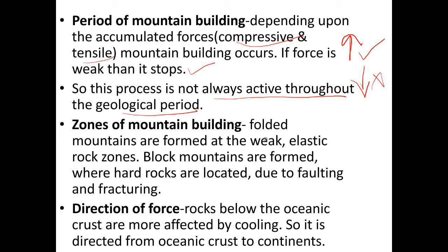Folded mountains are formed at weak and elastic rock zones, while block mountains are formed where hard rocks are located, due to faulting and fracturing. So he explains both folded mountains and block mountains — folded mountains form at weak elastic rock zones, whereas block mountains form at hard rock zones.